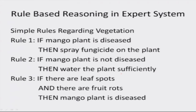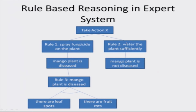Now let us see how rule-based reasoning is done in expert systems. These are three simple rules regarding vegetation. Rule 1: if mango plant is diseased, then spray fungicide on the plant. Rule 2: if mango plant is not diseased, then water the plant sufficiently. Rule 3: if there are leaf spots and there are fruit rots, then mango plant is diseased. It is easy to see that the conclusion of Rule 3 is the condition of Rule 1. The expert system is supposed to suggest an action, and it has these two rules to choose from — Rule 1 suggests spraying fungicide and Rule 2 suggests watering the plant.